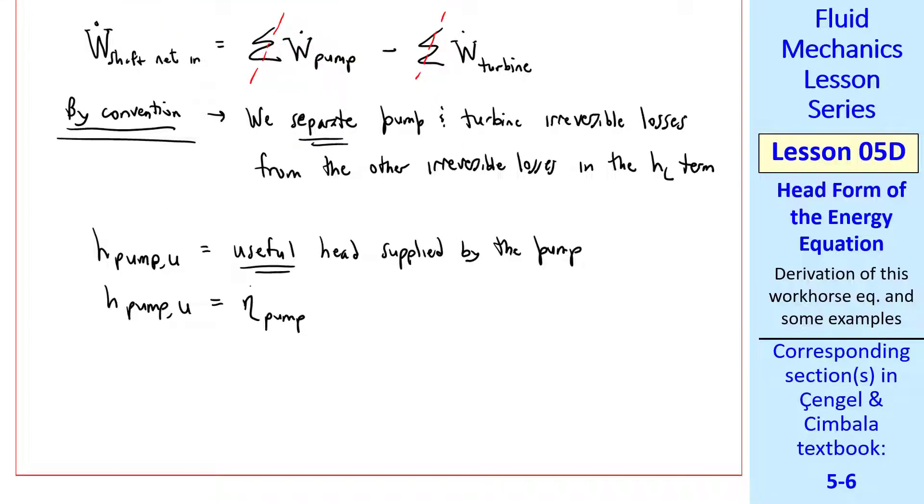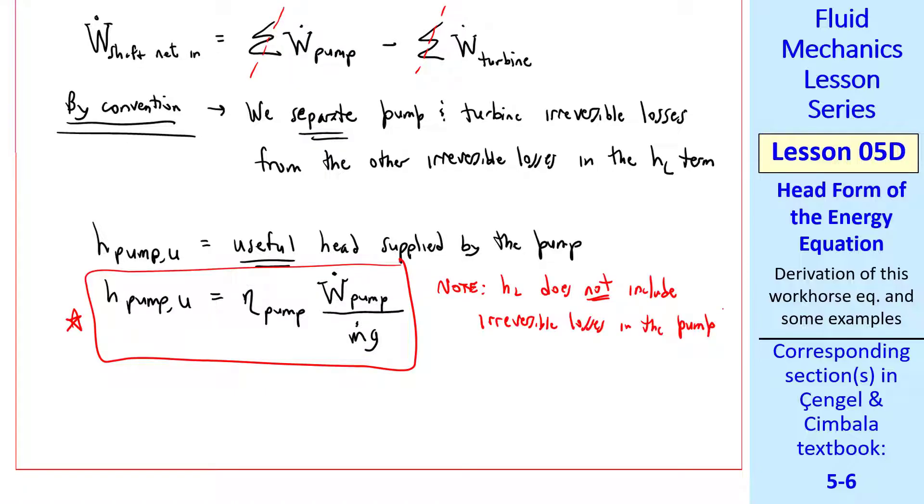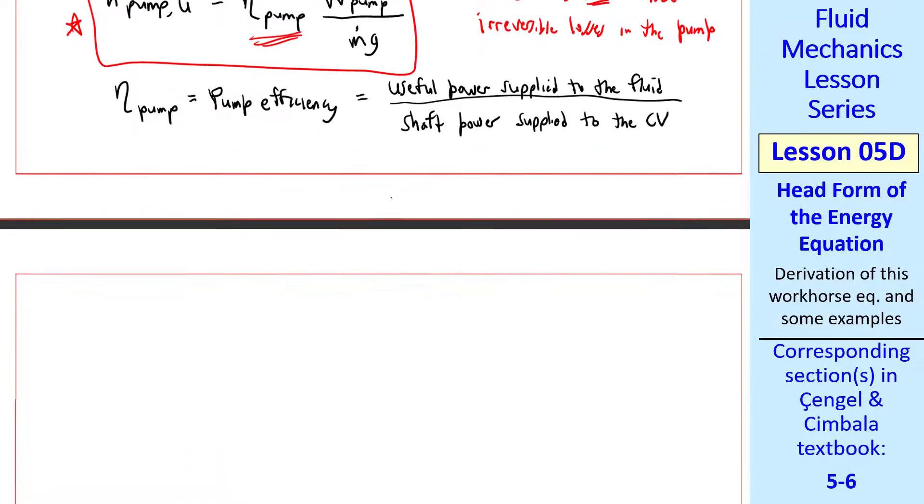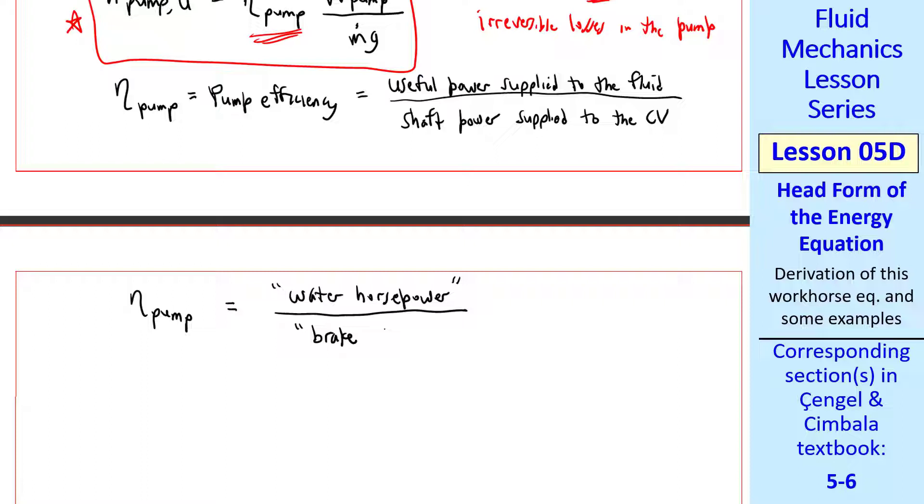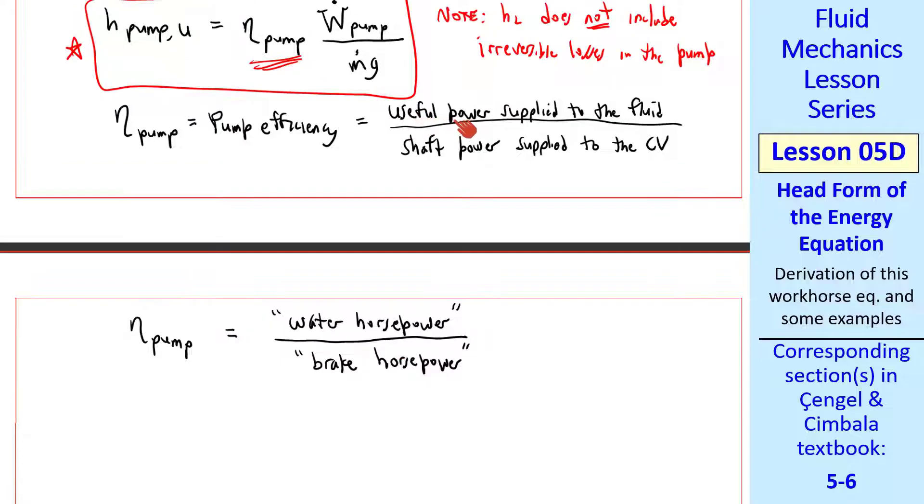Here's how we'll do that. We'll define H pump u as the useful head supplied by the pump. And we'll define a pump efficiency, eta pump. So H pump u is eta pump, the shaft power of the pump, W dot pump divided by M dot g. Note that there's an efficiency because there are irreversibilities in a pump. But we note that HL does not include irreversible losses in the pump. We're treating those separately by defining an efficiency of the pump. Eta pump is the pump efficiency, which we define as the useful power supplied to the fluid divided by the shaft power supplied to the control volume. In turbomachinery parlance, they call the numerator water horsepower and the denominator brake horsepower. This terminology is used even if the fluid is not water, but I prefer to call it useful power, hence the subscript u. Like any efficiency, eta pump has to be less than 1.